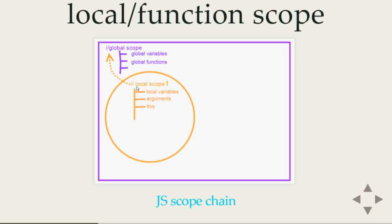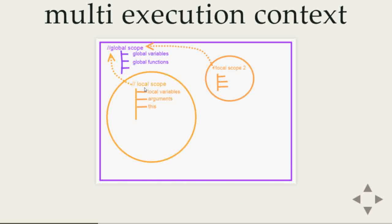It is fine to access a global variable once or twice, but if you want to access the same global variable thousands of times, you have to walk thousands of times outside your scope. If you're accessing the same value thousands of times, it is recommended to save the value in local scope so you don't have to walk outside repeatedly. When you have multiple functions, every function will have a chain towards the global scope, so you can walk through and get any global variable, but you can only access local scope variables inside that scope.